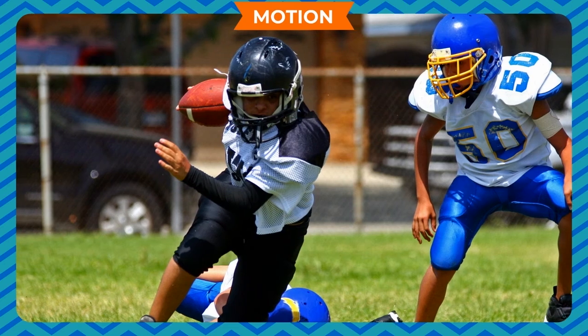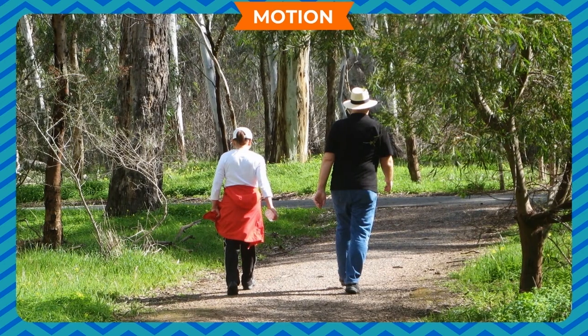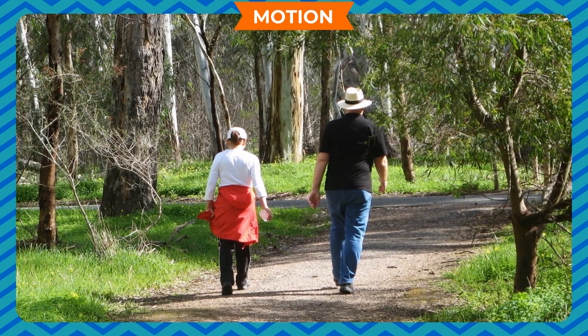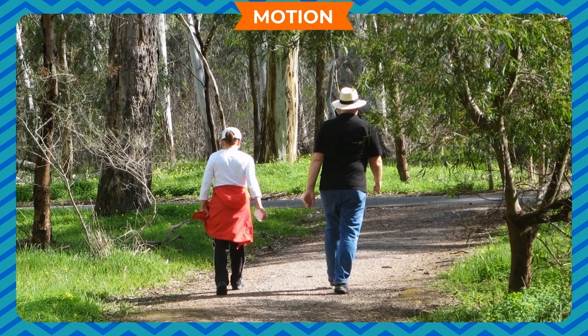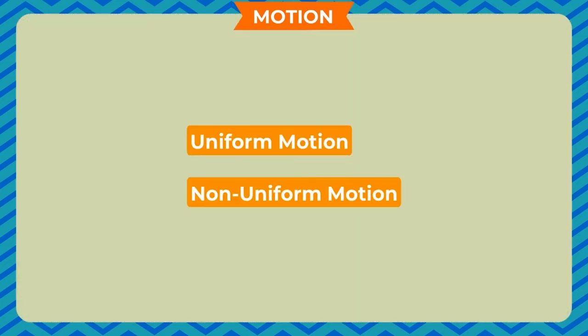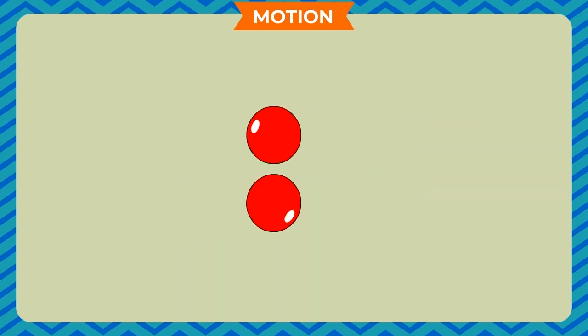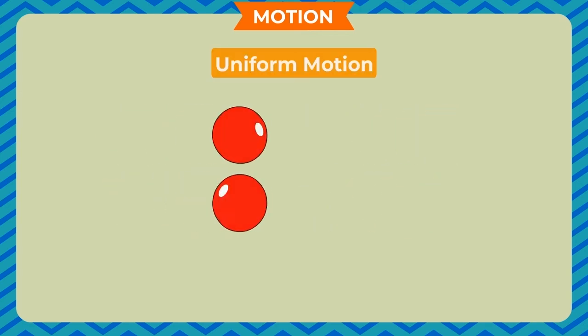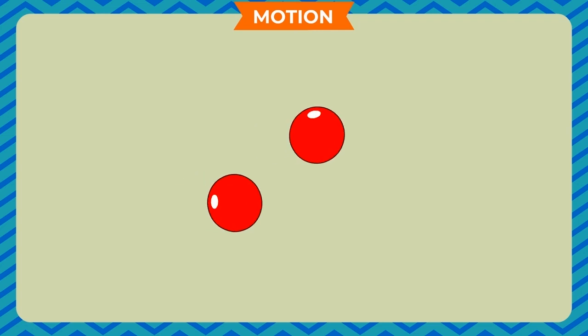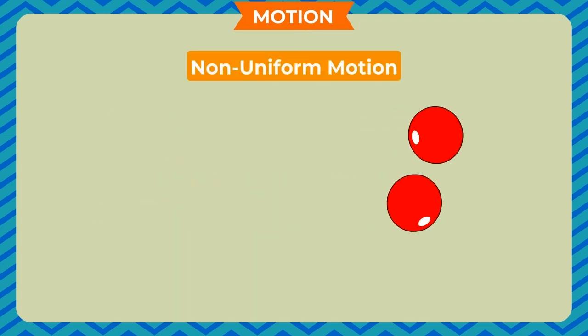Furthermore, when you play, run, or walk, you are always in motion. Motion can be mainly of two types: uniform motion and non-uniform motion. If an object covers equal distance in equal intervals of time, that is, with constant speed, this type of motion is called uniform motion. If an object covers unequal distance in equal intervals of time, this type of motion is called non-uniform motion.